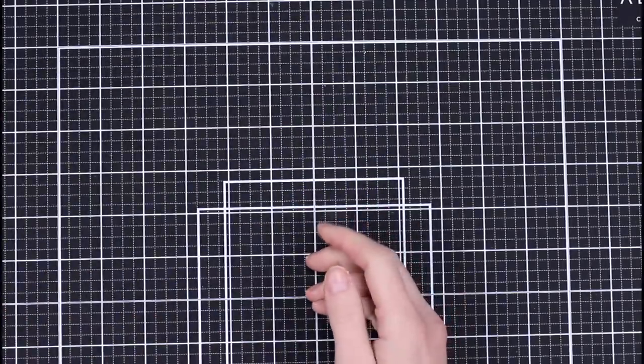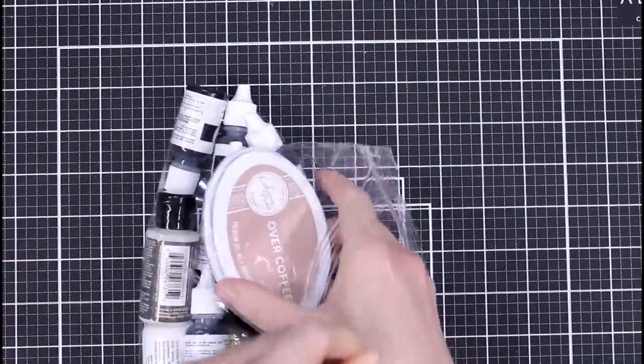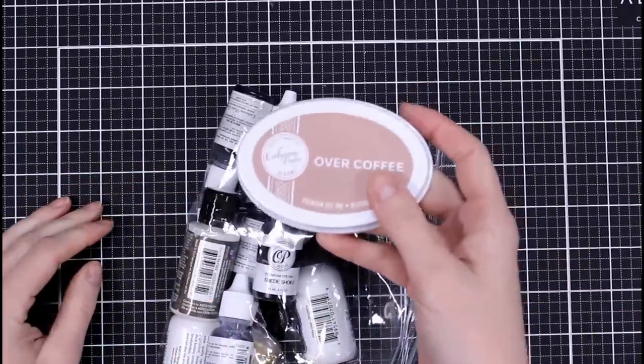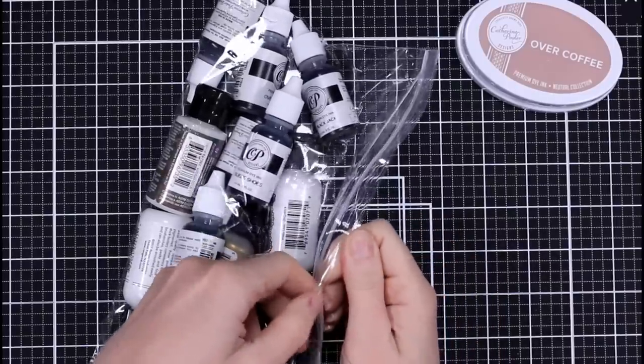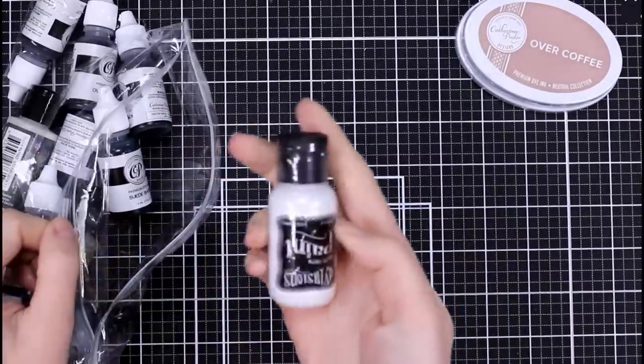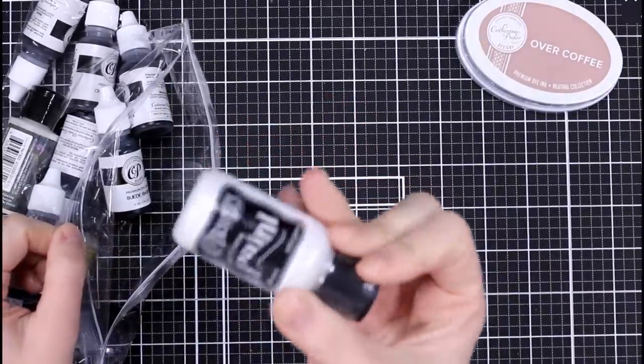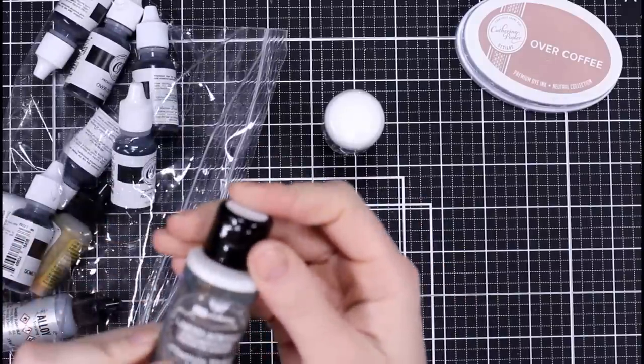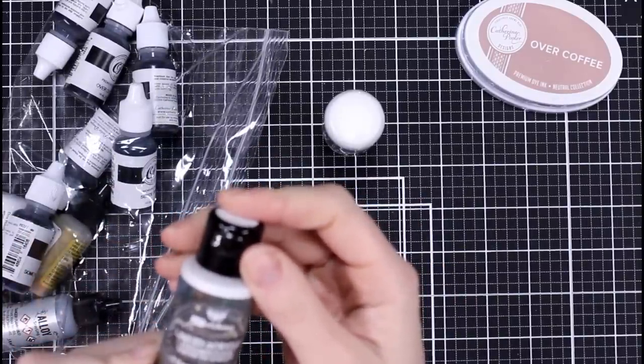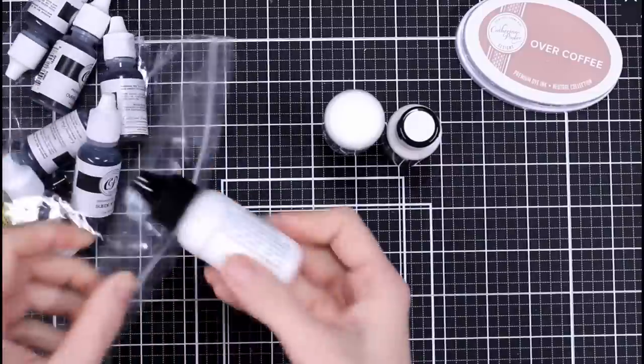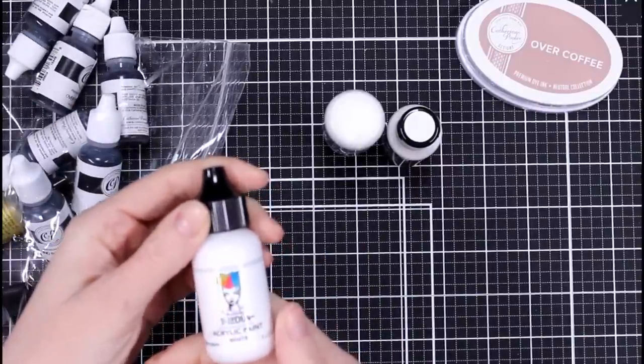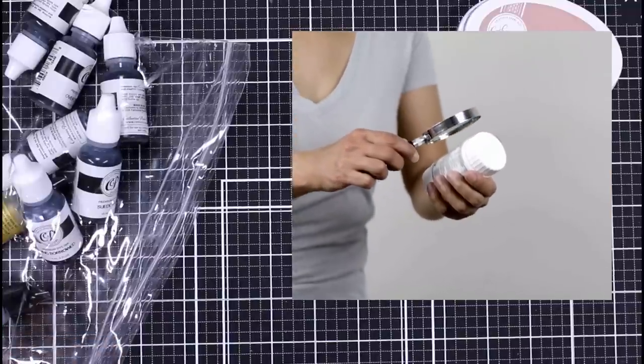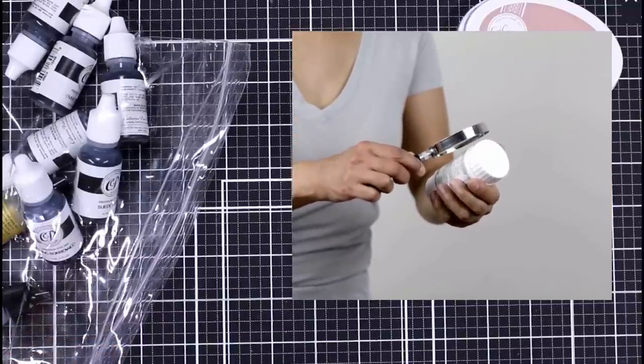A bunch of inks—for re-inkers, I had to get the new Over Coffee color because, you know, it's Catherine Pooler and it's coffee. Aside from just the re-inkers, I picked up this Delusions paint White Linen. This one is Liquid Acrylic Art Alchemy Titanium White. This one is acrylic paint white from Dina Wakley.